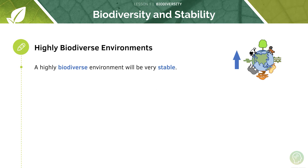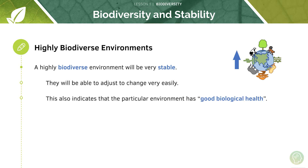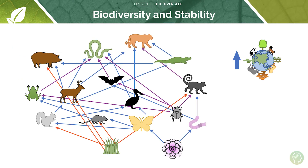A highly biodiverse environment will be very stable and able to adjust to change very easily. This also indicates that the particular environment has good biological health. Highly biodiverse environments occur because food webs have more and more overlapping links, meaning very few species will rely on only one other species to provide food. There will also be more opportunities for shelter and supplies.